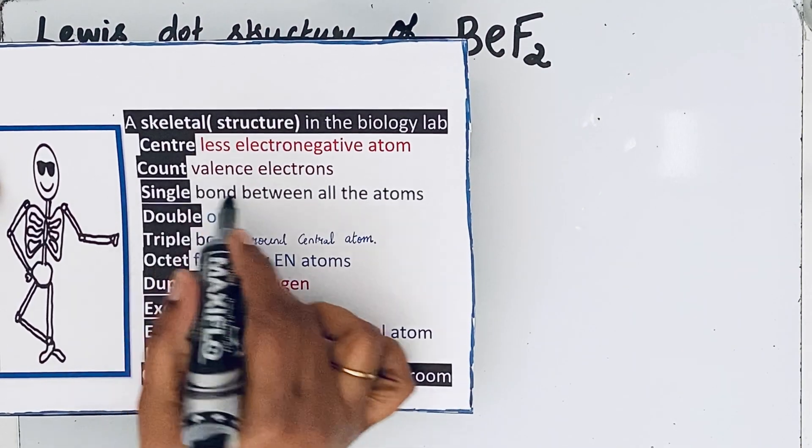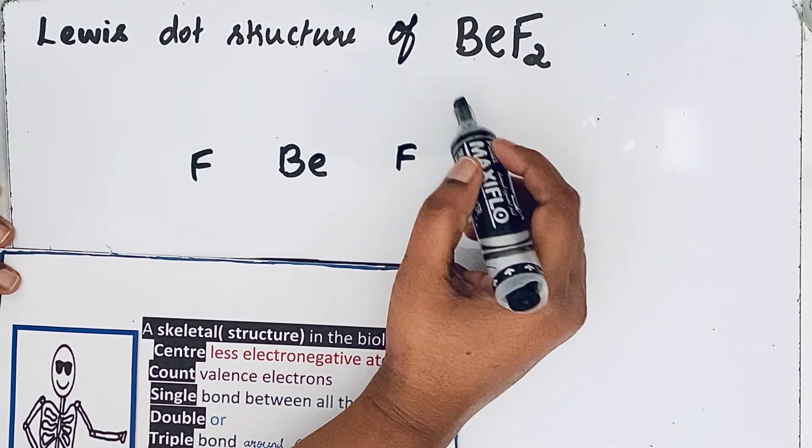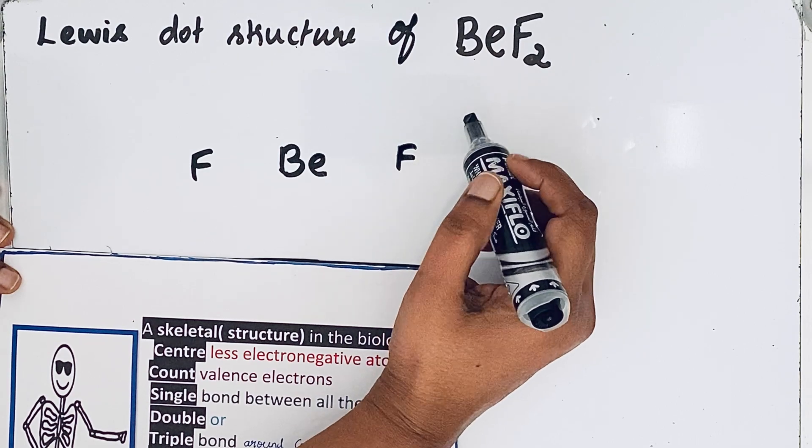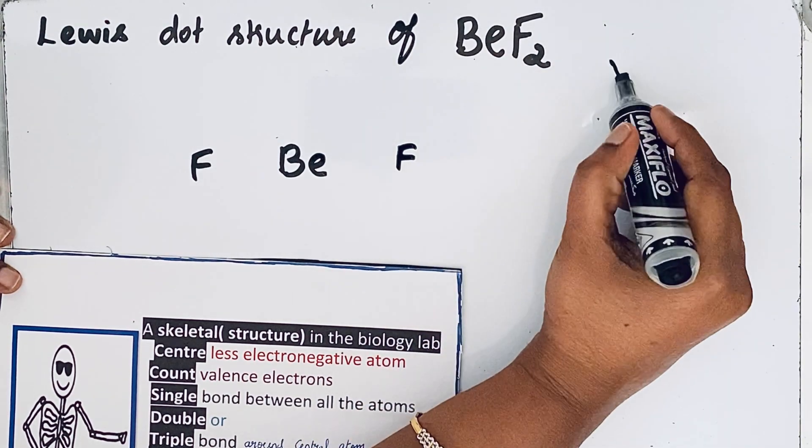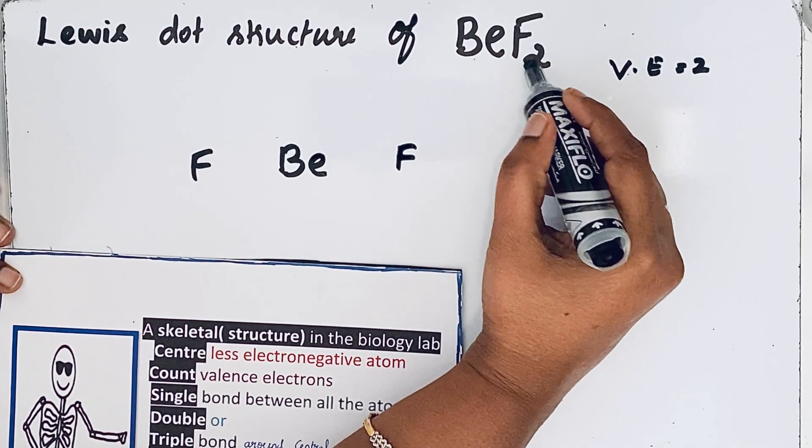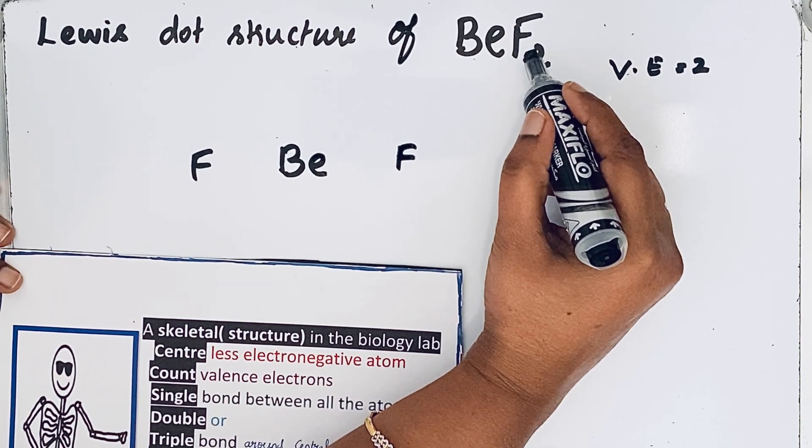Then see the third step: count valence electrons. We go to find that number of valence electrons because in Lewis structure we are going to show that only that valence electrons in the form of dots. So beryllium valence electrons 2, and then here for fluorine we have two fluorine atoms, the valence electrons in fluorine is 7, so 2 into 7.